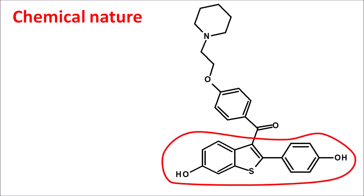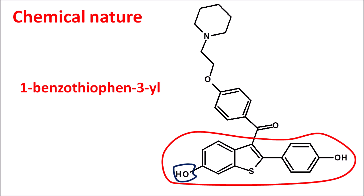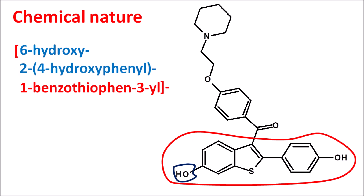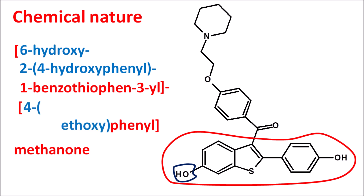First of all, let us see the chemical nature of this drug. This is the structure of Raloxifene. Here we can observe the benzothiophene moiety with some side chains. This benzothiophene is attached with a ketone group at the third position, so we can write this as 1-benzothiophen-3-yl. At the sixth position it has a hydroxy group — 6-hydroxy. At the second position it has a para-hydroxyphenyl group — 2-(4-hydroxyphenyl). This group is attached immediately to a ketone group, and on the other side of the ketone we can observe a phenyl group. This phenyl group has an ethoxy chain at the fourth position — 4-ethoxy. And this ethoxy group is attached with a piperidine ring system at the second carbon — 2-piperidin-1-yl. That is the complete name of Raloxifene. So, Raloxifene is a SERM which is a benzothiophene derivative.